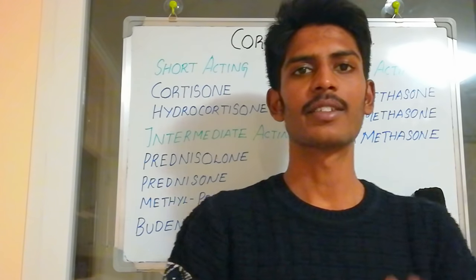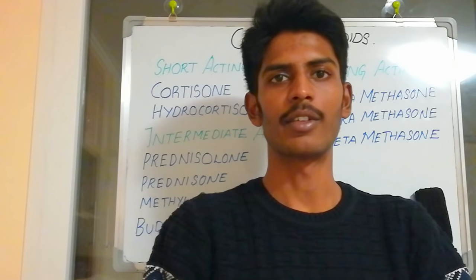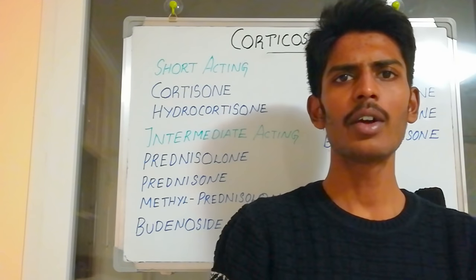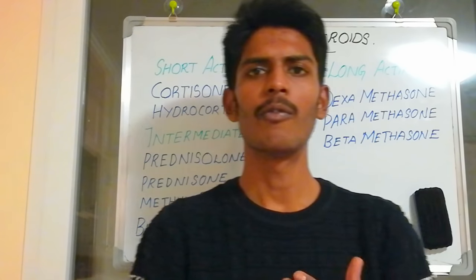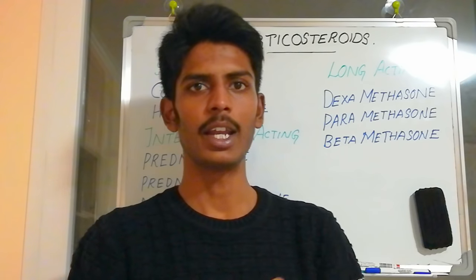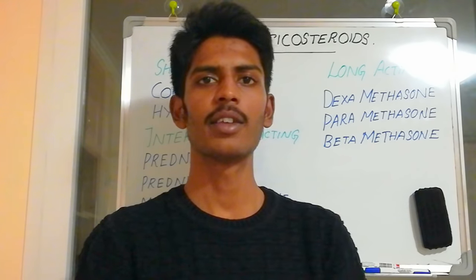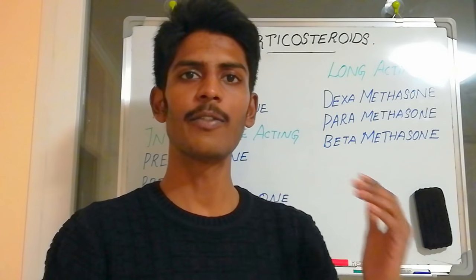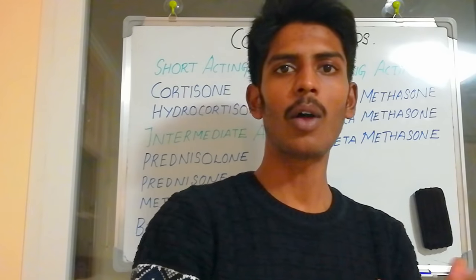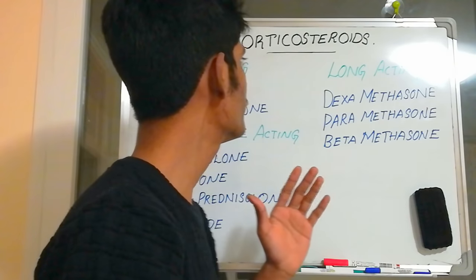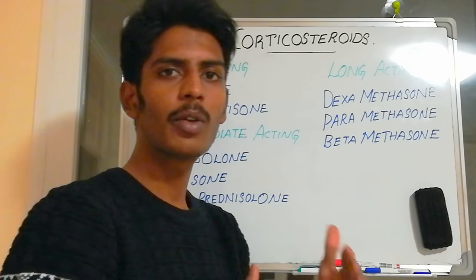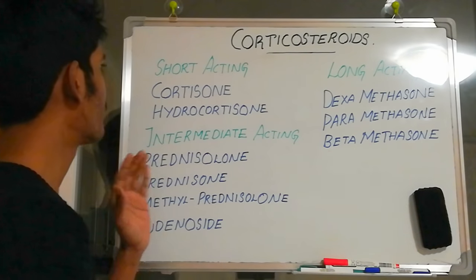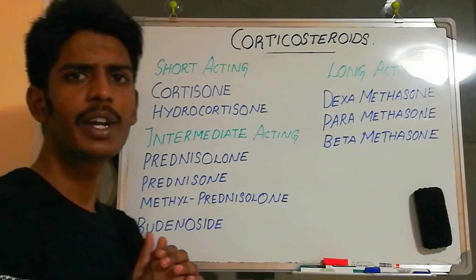Today we'll discuss corticosteroids pharmacology. Steroids are produced in our body in the adrenal gland. They have their own functions and importance, and we also have drugs which are artificially prepared. Let's discuss the classification first, then we'll go through steroids step by step. These drugs are classified into three groups according to their duration of action.